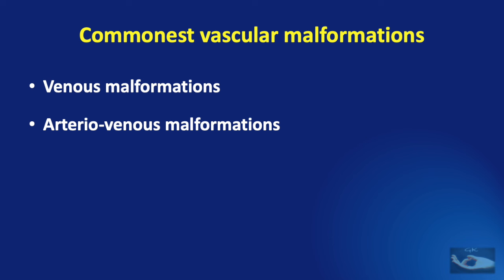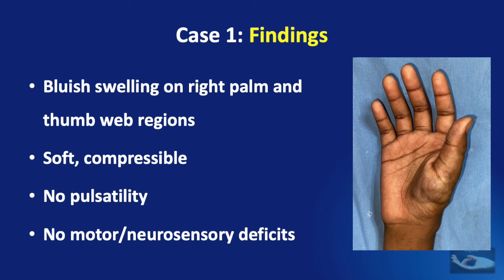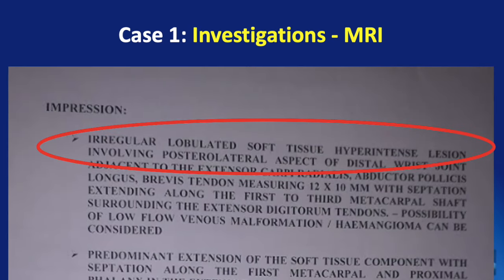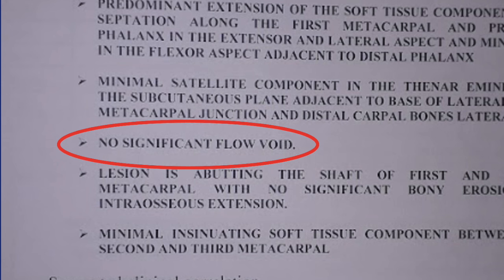The commonest types of vascular malformations are venous malformations and arteriovenous malformations. We shall study the difference using case studies. A 15-year-old boy presented with a swelling on the right palm of three years duration. There was occasional pain but no bleeding or ulceration. Examination showed a bluish, soft, and compressible swelling on the right palm and thumb web region with no pulsatility and no motor or neurosensory deficits. MRI revealed an irregular lobulated soft tissue hyperintense lesion in the subcutaneous area extending to the muscle level, with no significant flow void.